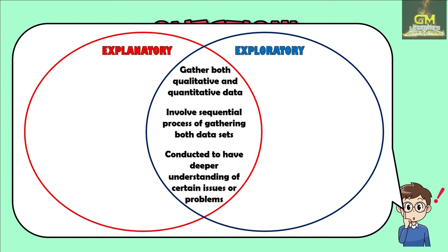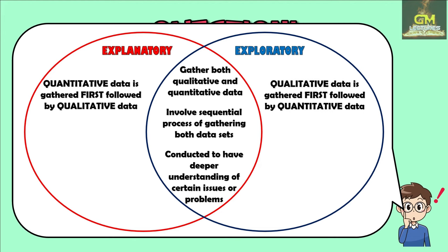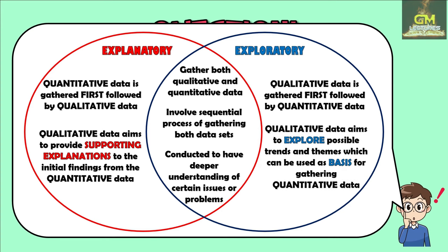When it comes to differences: in the explanatory sequential design, the quantitative data is gathered first, followed by the qualitative data. Furthermore, in the explanatory sequential design, the qualitative data aims to provide supporting explanations to the initial findings from the quantitative data. While in the exploratory sequential design, the qualitative data that is gathered aims to explore possible trends and themes which can be used as a basis for gathering quantitative data.